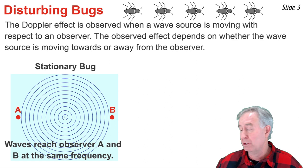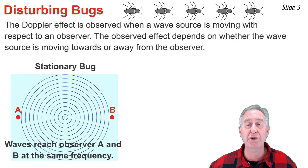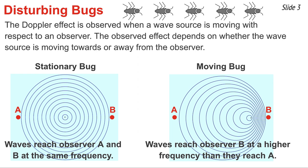Each one of the observers would observe the waves approaching their boat at the same frequency. But in the case of the bug moving to the right, the two observers would observe the waves reaching their boat at different frequencies. Observer B on the right, to whom the bug is approaching, would observe the waves approaching its boat at a higher frequency than observer A.